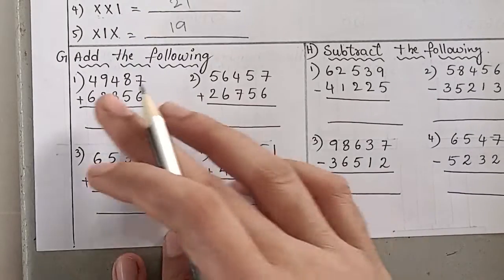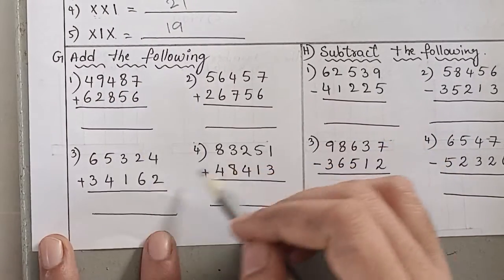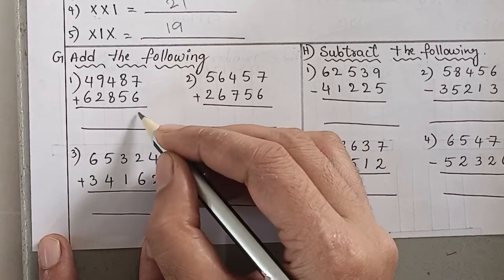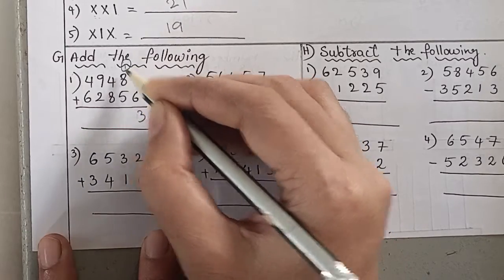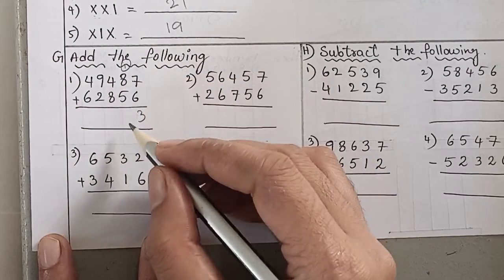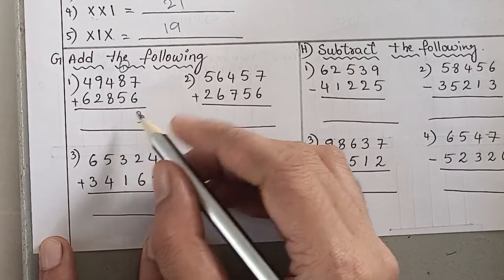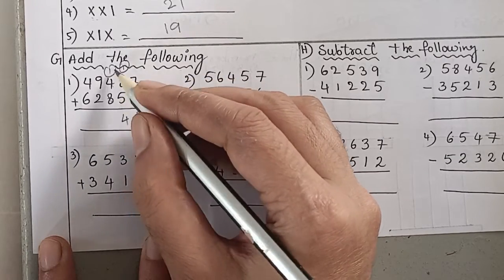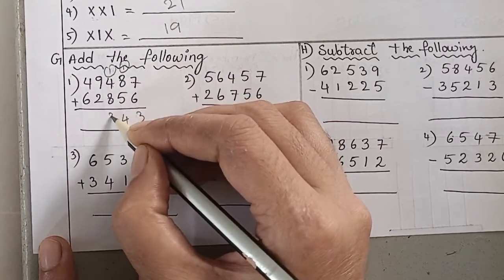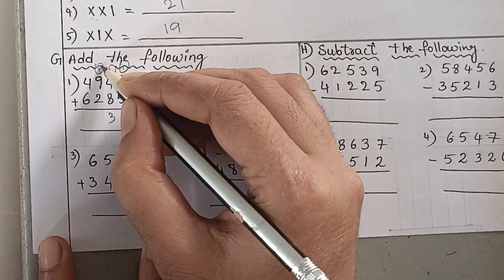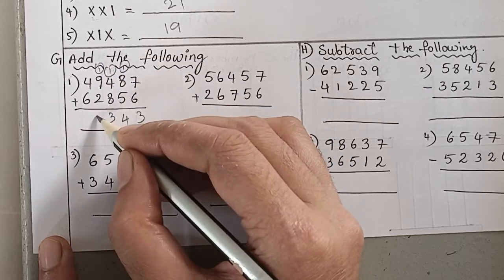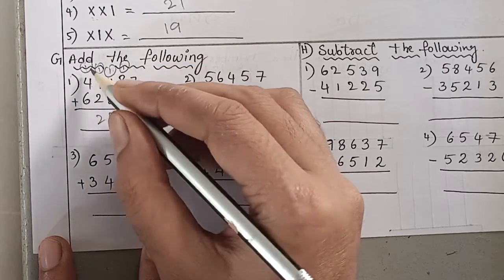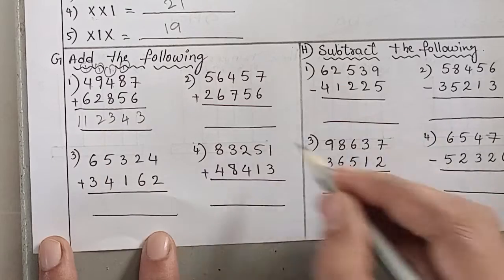Next bit: G bit — add the following. Seven plus six is thirteen, write three carry one. Eight plus carry one is nine. Nine plus five is fourteen, write four carry one. Eight plus four is twelve, plus one is thirteen, write three carry one. Nine plus carry one is ten, plus two is twelve, write two carry one. Six plus four is ten, plus carry one is eleven.